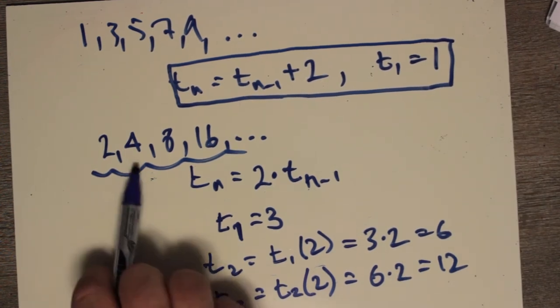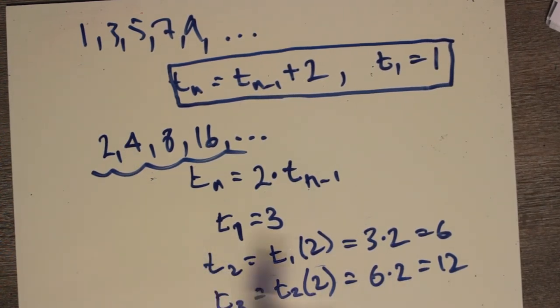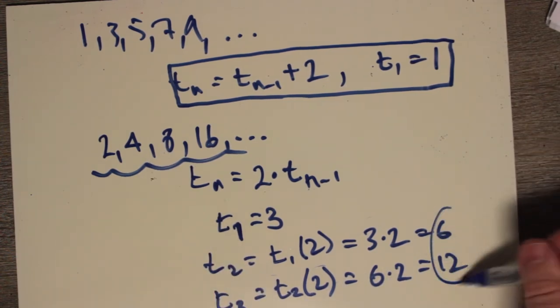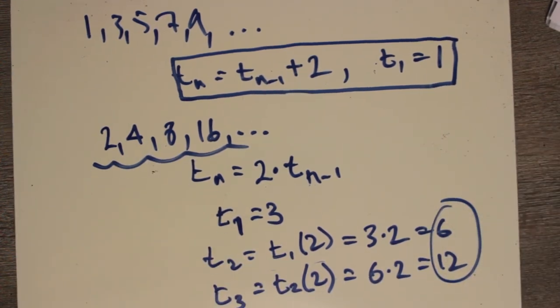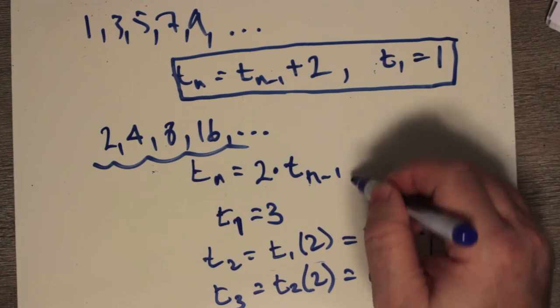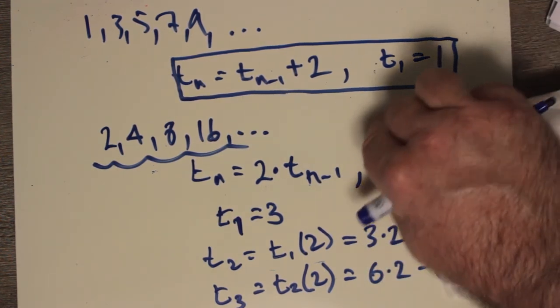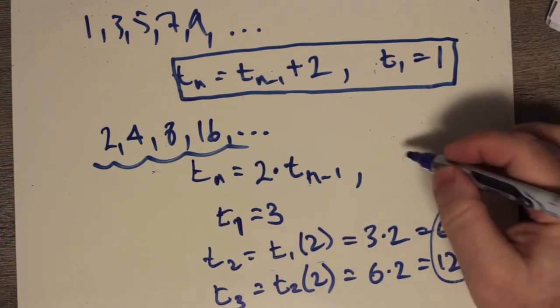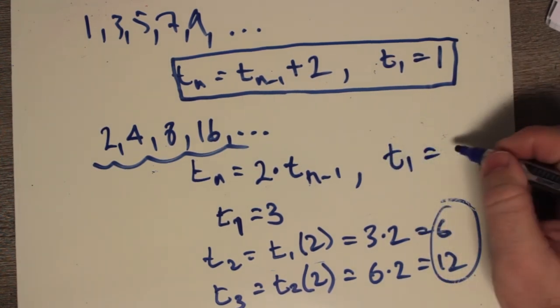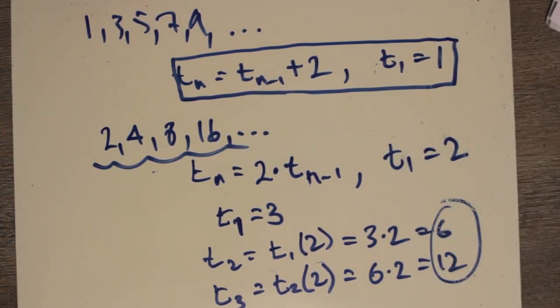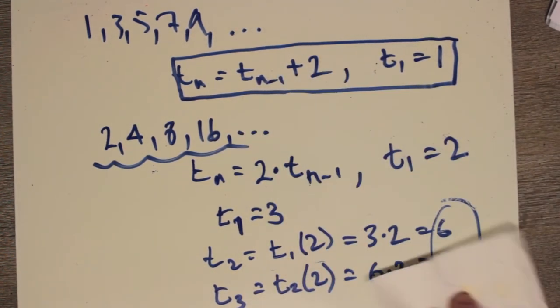But that doesn't fall in the sequence at all. So t2 here is supposed to be 4. t3 is supposed to be 8. But instead, I'm getting 6 and 12. So as you can see, I need to know the first term. So t1, we say here that t1 is equal to 2. And that way, we can unambiguously and exactly get this sequence and nothing else.